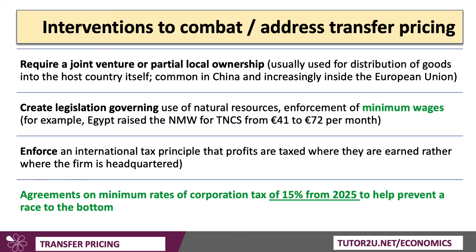Governments might improve enforcement of laws about natural resources — where do the profits from oil, copper, and coal extraction go? Governments may also enforce national minimum wages to keep incomes high; Egypt, for example, raised the national minimum wage for transnational corporations from €41 to €72 per month. Another approach is stronger enforcement of the international tax principle that profits should be taxed where they're earned, rather than where the firm is headquartered. A key development is a multilateral agreement — not yet fully implemented — on a minimum rate of corporation tax of 15% from 2025 among leading countries, to help prevent the race to the bottom.